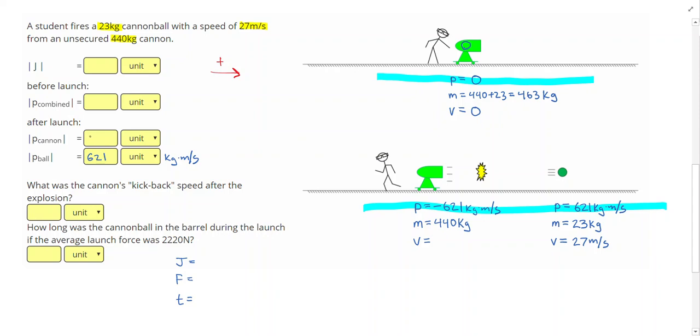Conservation of momentum tells me I need the same amount of momentum on the first line as on the second line. But at my initial time, I had no momentum. For me to get no momentum on the second line, I know that my momentum of the cannon must be negative 621 kilogram meters per second to cancel out the cannonball's momentum. So the magnitude of the cannon's momentum was also 621 kilogram meters per second. I can calculate my velocity for the cannon by doing 621 divided by 440, which gives me 1.41 meters per second. That is the kickback speed.